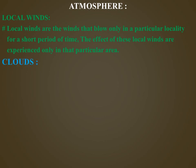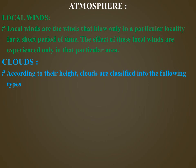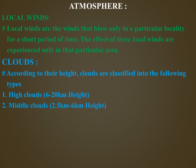Next we are going to learn about clouds. According to their height, clouds are classified into the following types: high clouds at 6 to 20 km height, middle clouds at 2.5 km to 6 km height, and low clouds from the ground surface to 2.5 km height. These major types of clouds are further divided into different types on the basis of shape and structure.